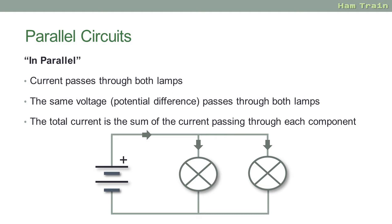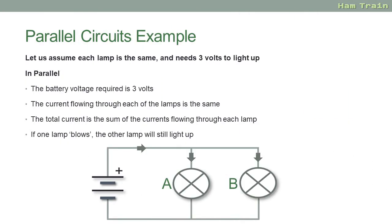This time around it's the current that's reduced. The total current for the circuit is the sum of the current through each of the components in parallel. So let's break that down with an example. In this example again we're going to assume that each lamp is the same and each lamp needs three volts to light up. Because the voltage is the same through both lamps, the supply voltage for the battery is three volts. The current flowing through lamp A is the same as the current flowing through lamp B. And if you added up the current going through A to the current going through B, that would give you the total current going through the circuit. The advantage here is if one of the lamps blows, the other lamp will still light.